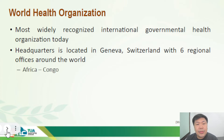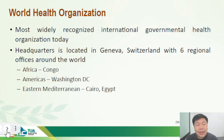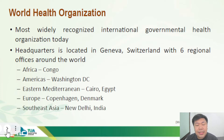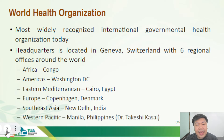The headquarters of the World Health Organization is at Geneva, Switzerland, and there are six regional offices around the world. These include the African region at Congo, the American region at Washington DC, the Eastern Mediterranean region at Cairo, Egypt, the European region at Copenhagen, Denmark, the Southeast Asian region at New Delhi, India, and the Western Pacific region at Manila, Philippines, headed by Dr. Takeshi Kasai.